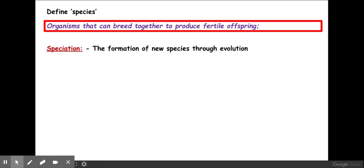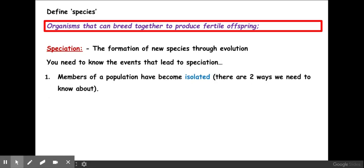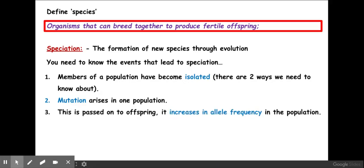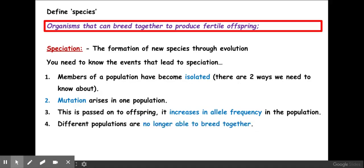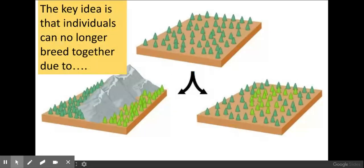Now we know what a species is, we need to think about how speciation occurs, which is the formation of a new species through evolution. What happens is that members of the same population become isolated, and within these different populations, mutations arise through genetic drift and random mutations. As a result, these mutations are passed on to offspring, increasing in allele frequency over time, until the populations are no longer able to breed together. This occurs over many many generations.